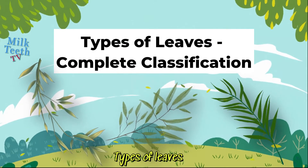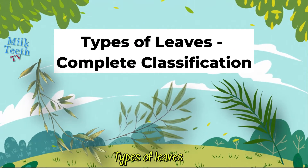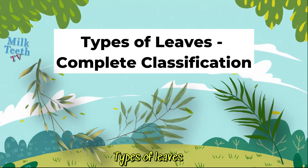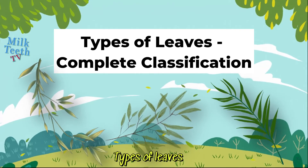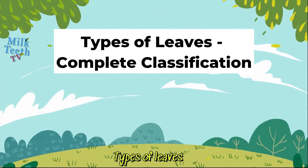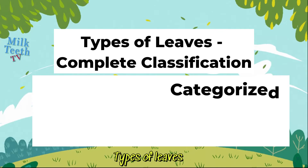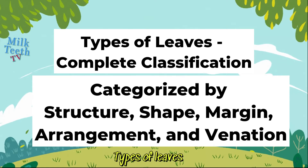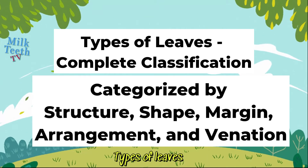Types of leaves. There are many types of leaves around us and today we shall be studying the complete classification of types of leaves, categorized by structure, shape, margin, arrangement, and venation. Based upon different parameters, leaves can be categorized as the following.